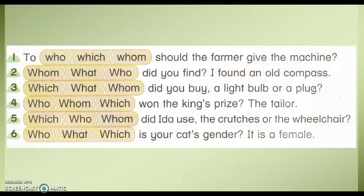Now, look at the exercises in your textbook. Number one: To whom should the farmer give the machine? When we look at a question, we always look for the keyword. Where is the keyword? "To." When you see "to," the answer is whom. To whom should the farmer give the machine? Number two: What did you find? I found an old compass. The keyword is an old compass.